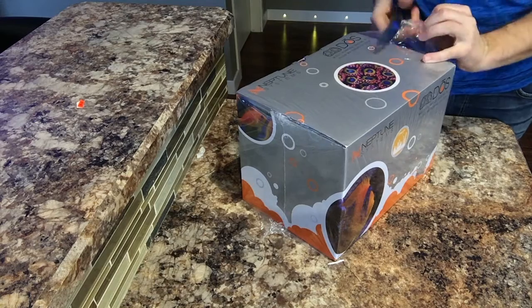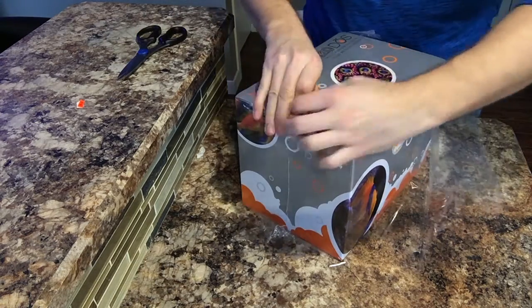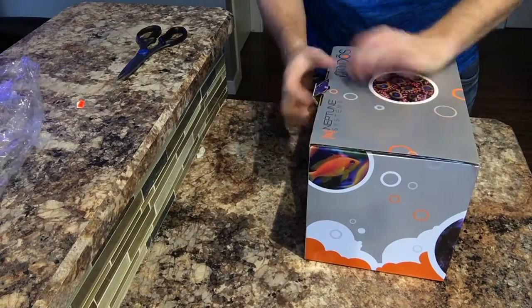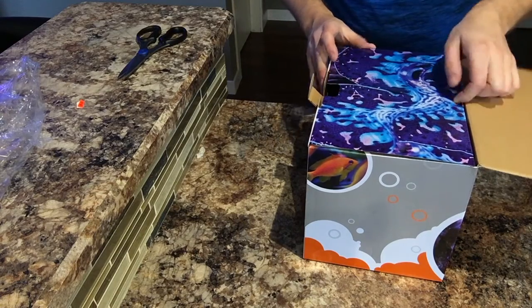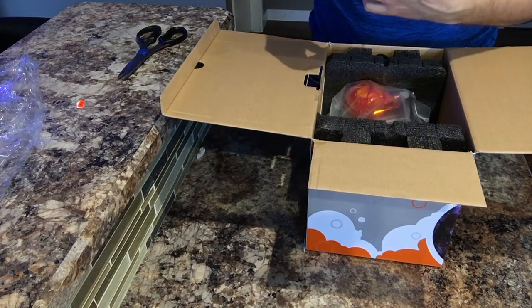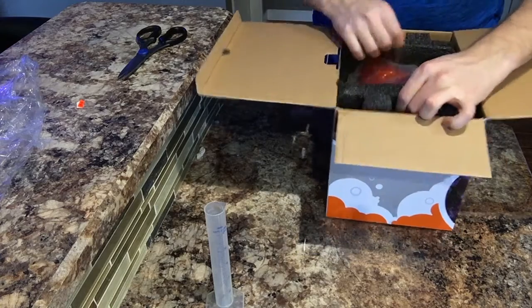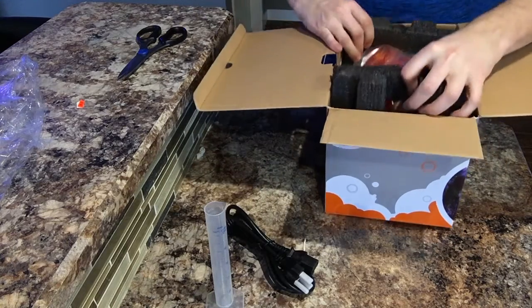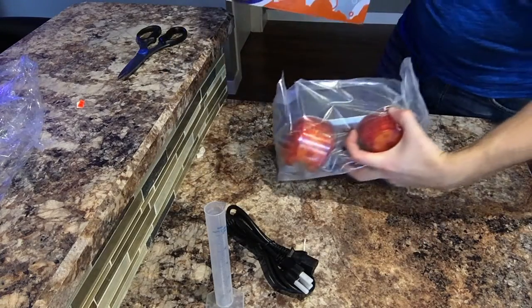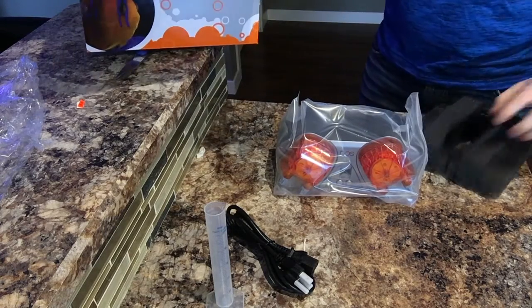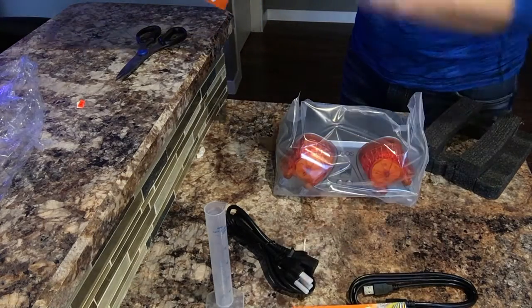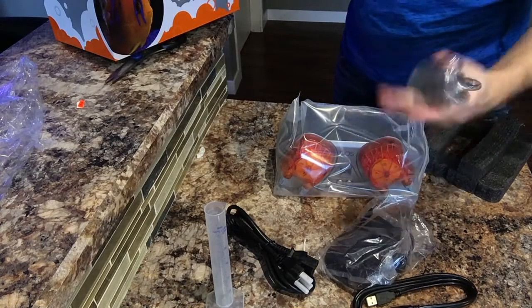Let's see what we actually get in the package. Nice clamp on the front. This is for calibrating. Power, and the DOS itself. Apex AlkaBus cable. Getting started guide. Power flow and some tubing.